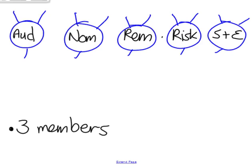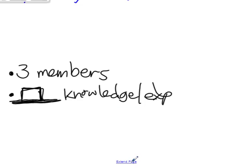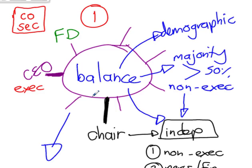The people within each committee must have the relevant knowledge and skill to fulfill their function — knowledge or experience in the relevant area, whether that's risk, social matters, or auditing. Then they need to meet — how often? For the board: King 3 said quarterly, four times a year; King 4 says as many times as required to fulfill their function. So if they're not fulfilling any one of their duties, you can argue they didn't meet enough.